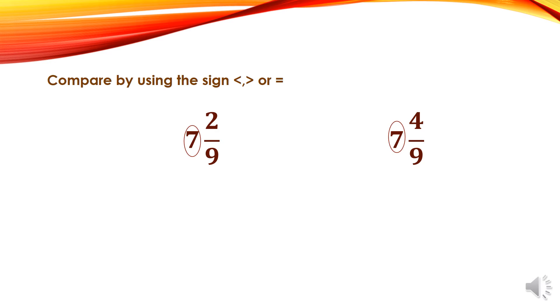First, here we have the same number and the same denominator. Then directly I want to compare the numerators. We have 2 and 4. Of course, 2 is less than 4. Then 7 and 2 over 9 is less than 7 and 4 over 9.